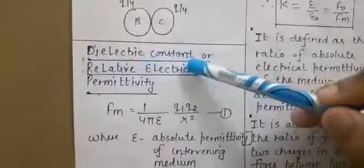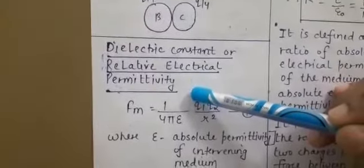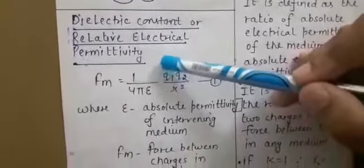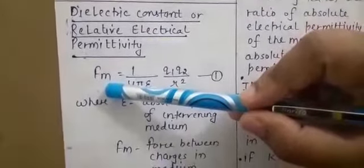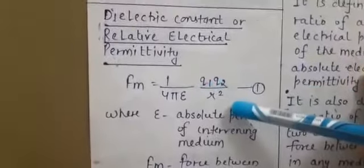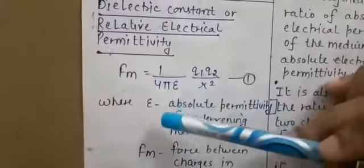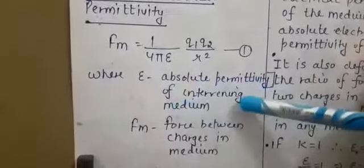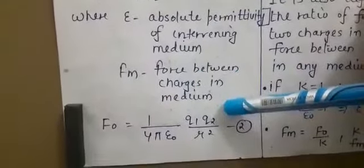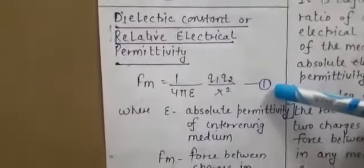Next topic: dielectric constant or relative electrical permittivity. We have studied force of interaction between charges in air. When a medium is present, the force formula changes: F_m = (1/4πε) × Q1 Q2 / R², where epsilon is the absolute permittivity of the intervening medium other than air. For charges in free space or air, the formula uses epsilon 0, giving F_0 = (1/4πε₀) × Q1 Q2 / R².